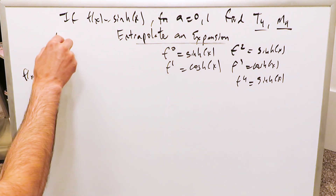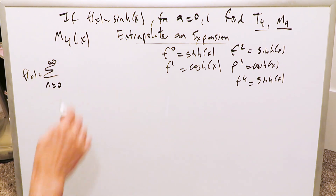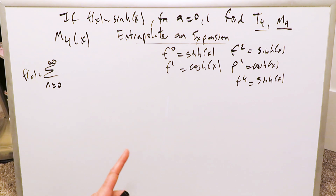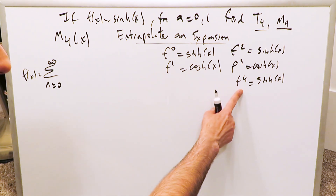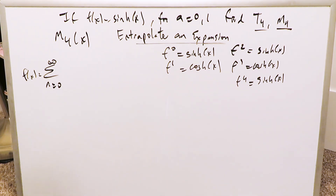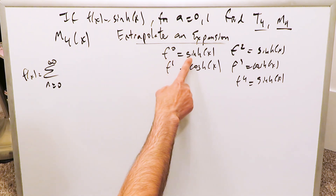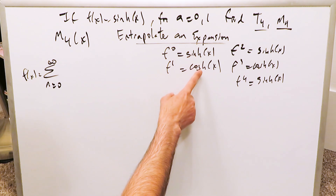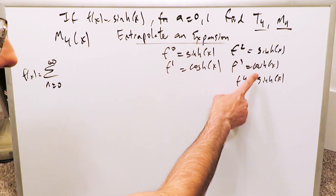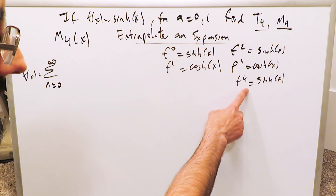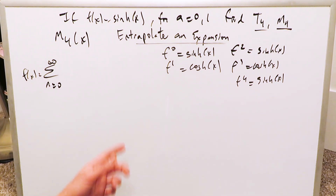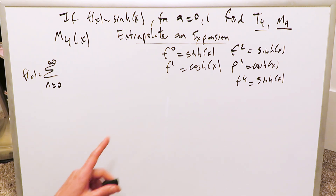Why don't we start with the M4 determination? For the hyperbolic sine, we're going up to n equals 4. The derivatives of hyperbolic sine and hyperbolic cosine are easy — they shuffle back and forth. The zero-order derivative is equal to the original function. The next derivative is hyperbolic cosine, the next is hyperbolic sine, then hyperbolic cosine, and the last one at n equals 4 is hyperbolic sine. It's alternating back and forth, which is why this makes for a very good exercise for beginners.